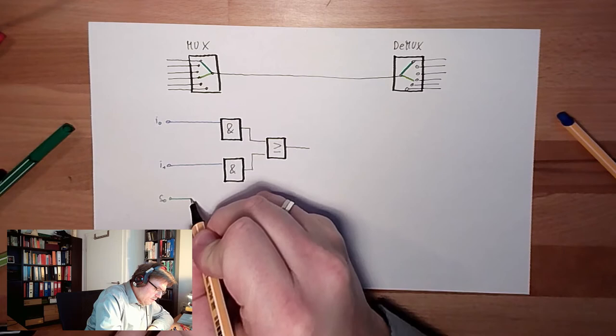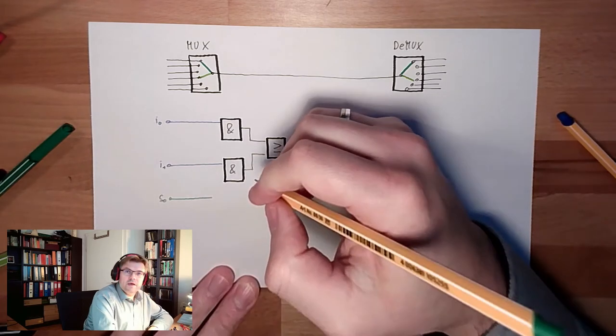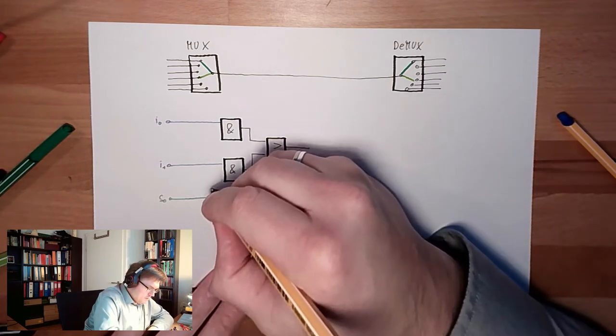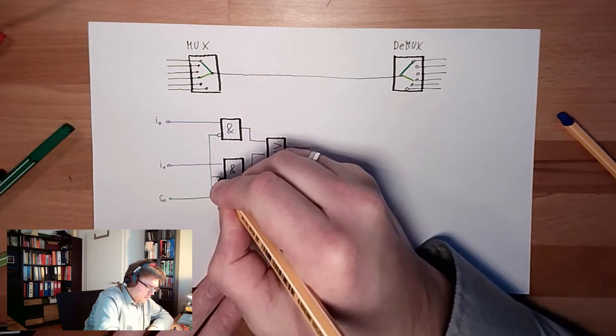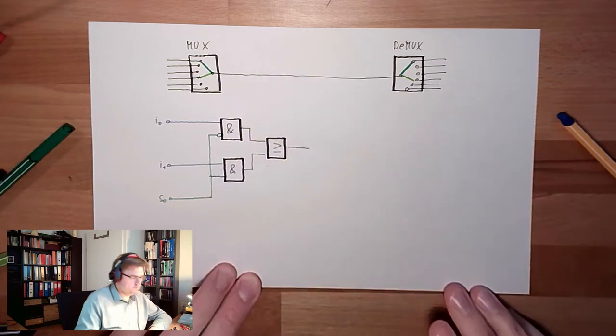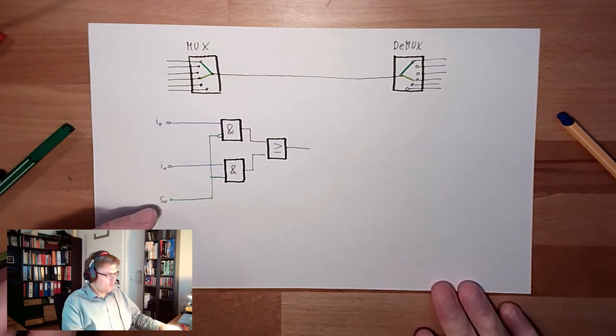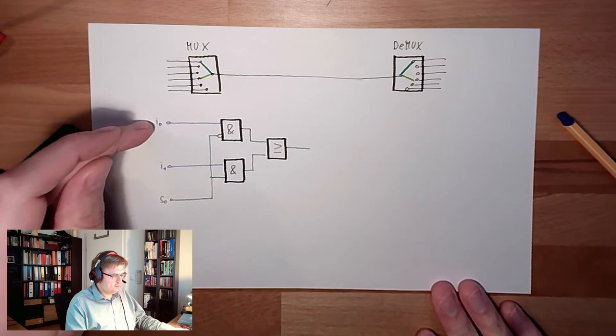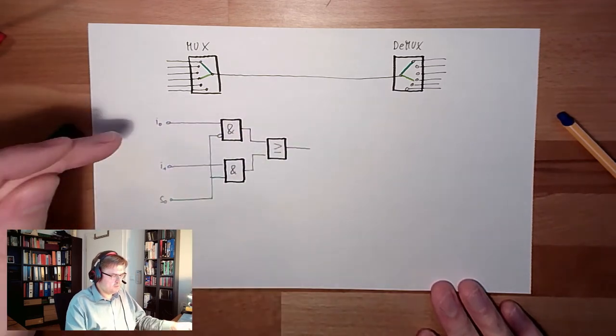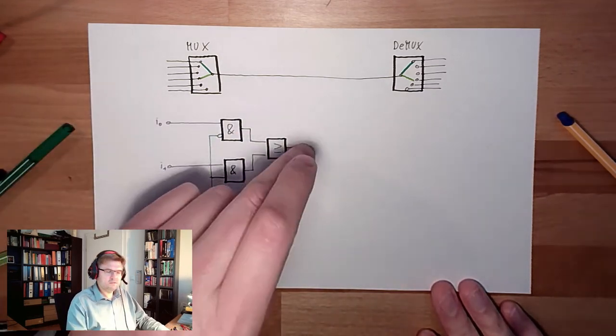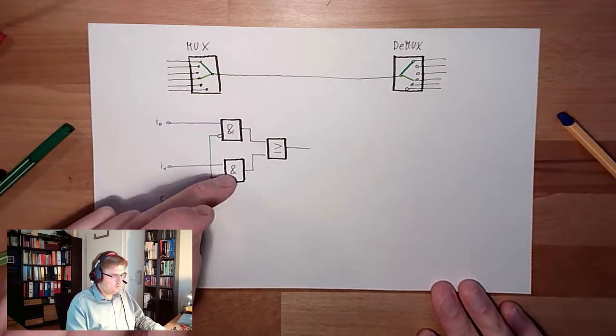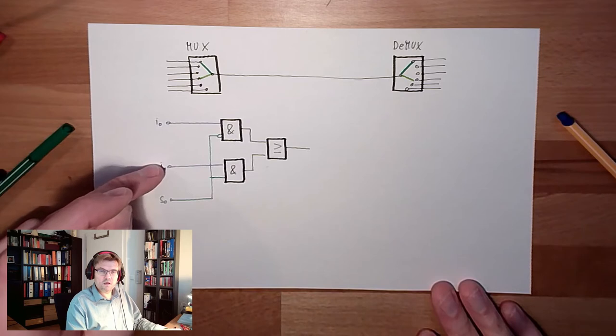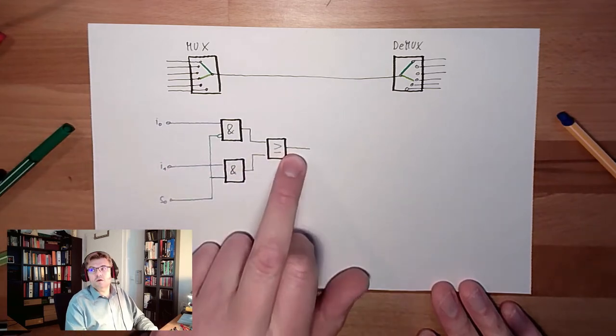And with this selection input, I want to select if I select zero, this one, or now, or one. So, if S zero, in this case, is now, this and is passing, I need, I get I zero here. If S zero is one, then this and is letting pass the signal on I one, and I'm getting I one here.